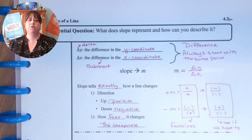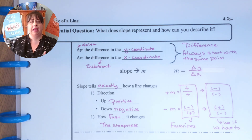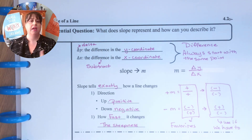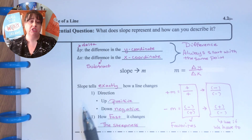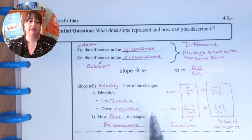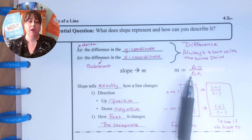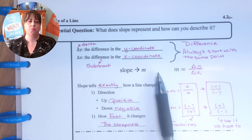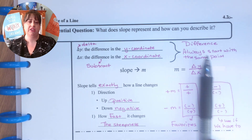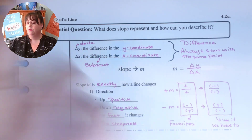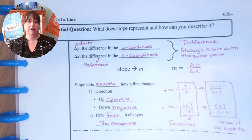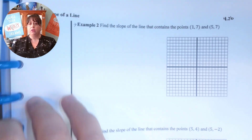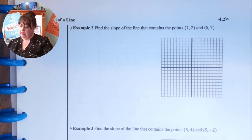You should be on 4.2a — that is a good place to start. We need to remember that slope is delta y over delta x; it's the change in y over change in x. 4.2a is where you had your last lesson. Turn the page to 4.2b.